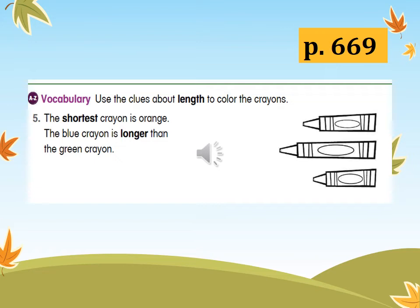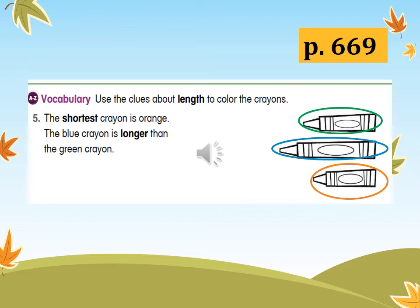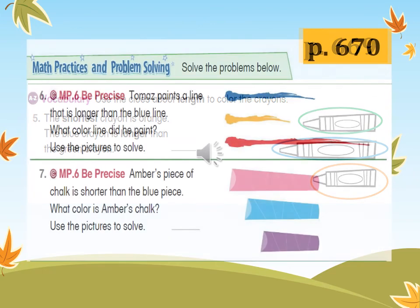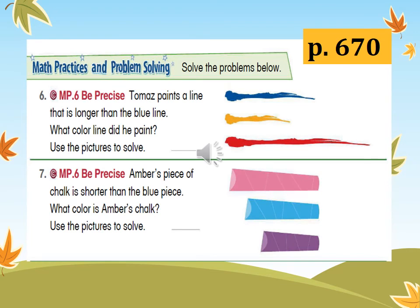Can you color them? Are you done coloring? Great job. Let's see if your answers are correct. The orange crayon is the shortest and the blue crayon is the longest. Are you correct? Now go to page 670 of your book.